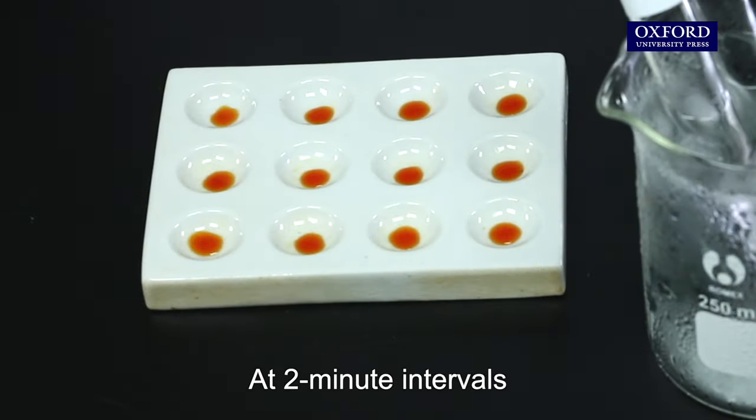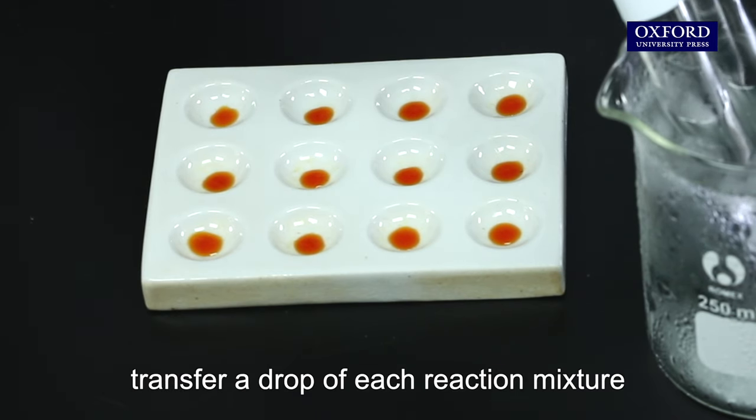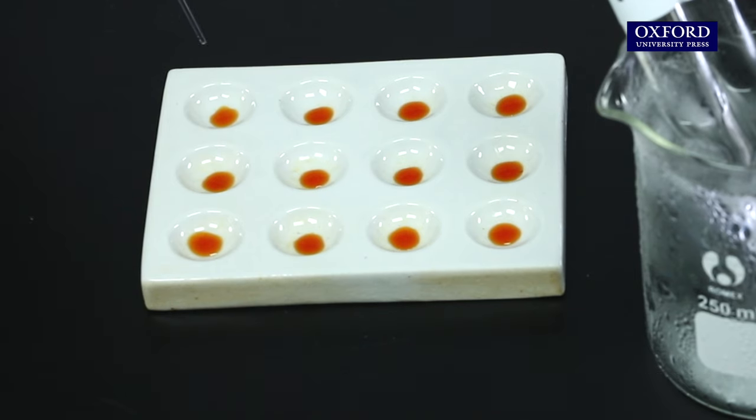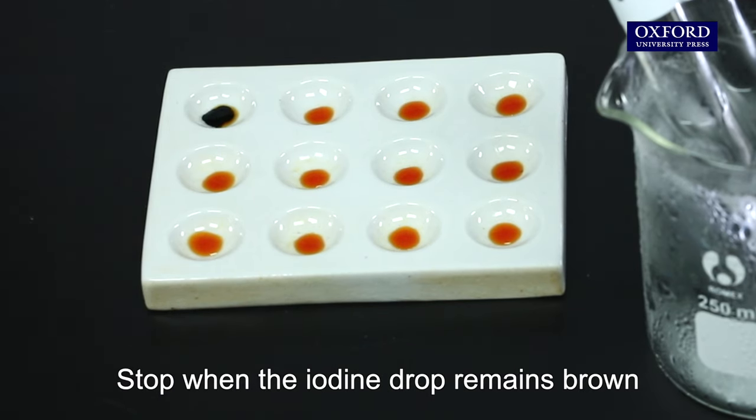At 2 minute intervals, transfer a drop of each reaction mixture to an iodine drop on the spot plate with a clean dropper. Stop when the iodine drop remains brown.